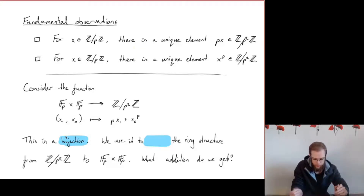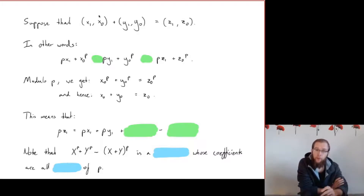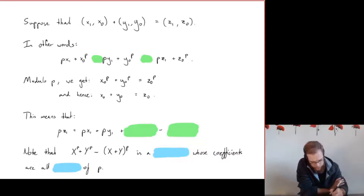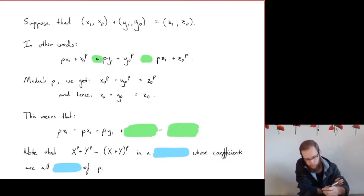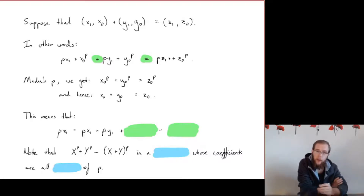If you stare at this a little bit you realize that this function is actually a bijection. So we can use this function to transfer the ring structure from Z/p²Z to Fp × Fp. Let's do that and see what the result looks like. Suppose we have three pairs in Fp × Fp: (x₁, x₀), (y₁, y₀), and (z₁, z₀), satisfying the equation that if you add the first two you get the last one.